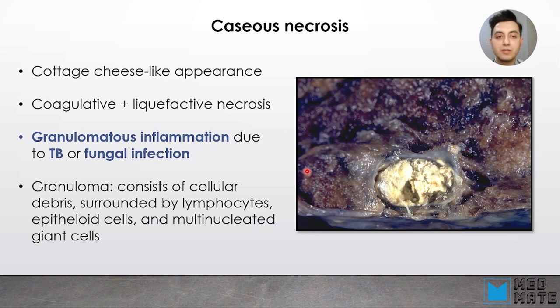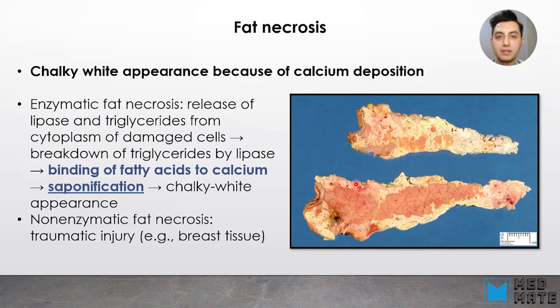Another type of necrosis is caseous necrosis. Caseous necrosis has a cottage cheese-like appearance. It is a combination of coagulative necrosis and liquefactive necrosis, and here we have granulomatous inflammation. Granulomatous inflammation can be due to tuberculosis or fungal infections. A granuloma consists of cellular debris surrounded by lymphocytes, epithelioid cells, and multinucleated giant cells.